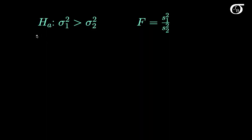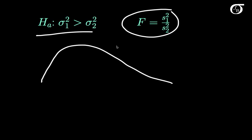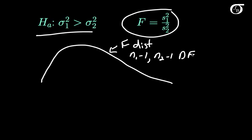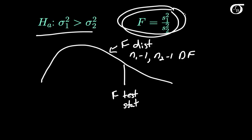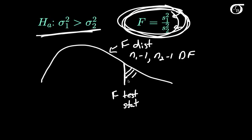Suppose our alternative hypothesis is that sigma 1 squared is greater than sigma 2 squared. If the null hypothesis is true, that F statistic has an F distribution with N1 minus 1 and N2 minus 1 degrees of freedom. Large values of this test statistic, meaning S1 squared is quite a bit larger than S2 squared, give us evidence against the null and in favor of this alternative. So our p-value is the probability of getting the value we get in our sample or something even larger — the area to the right of the test statistic.